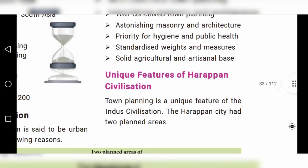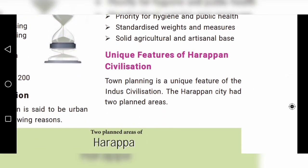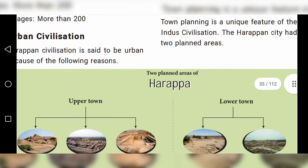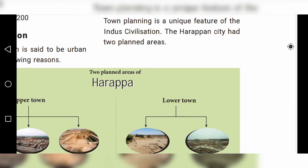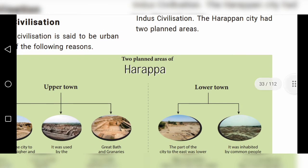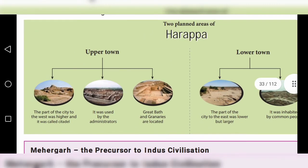Unique Features of Harappan Civilization: Town planning is a unique feature. The Harappan city had two planned areas — the upper town and the lower town. In the upper town, there are three divisions.